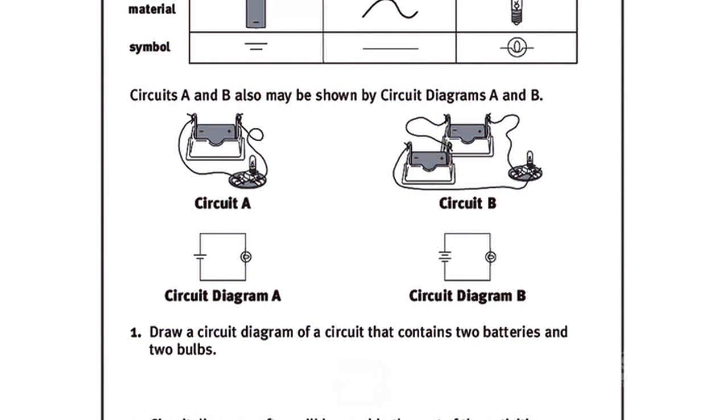Bring attention to the circuit diagrams of circuits A and B. Point out that in circuit diagram B, two symbols for a battery are placed next to each other to indicate two connected batteries. Further explain that two battery symbols are sometimes drawn with a short vertical line depicting the wire that connects the two batteries.